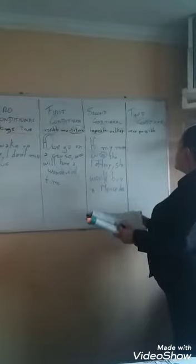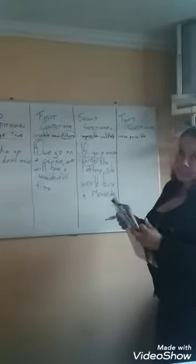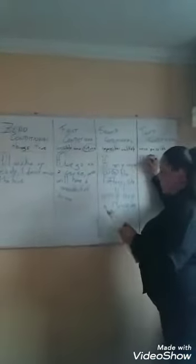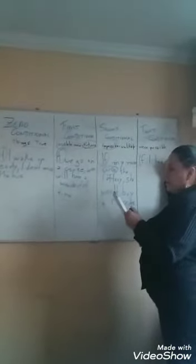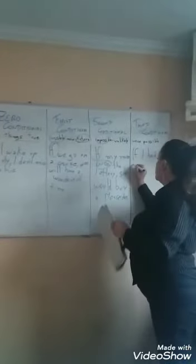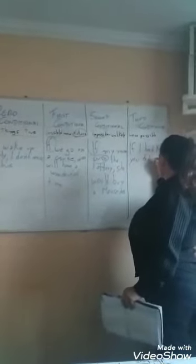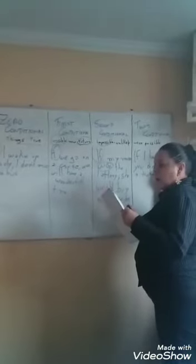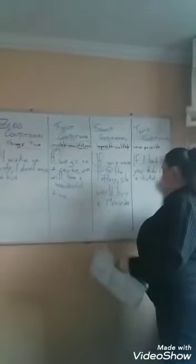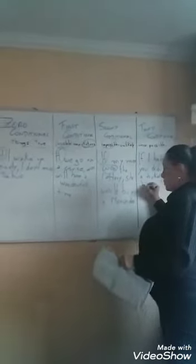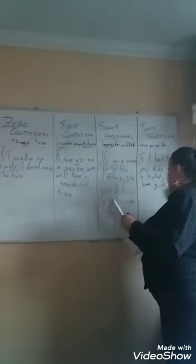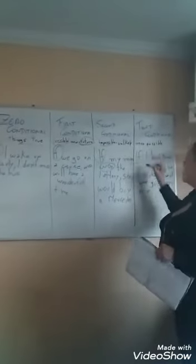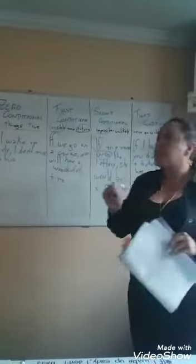The third conditional is when the thing was possible but didn't happen. For example, if I had known you didn't have a ticket, I would have given you one. That's why it can be possible — where it was possible. Always remember the conditional — we use "if".